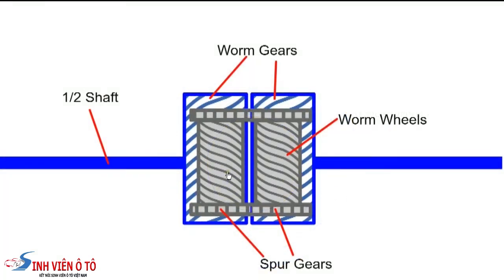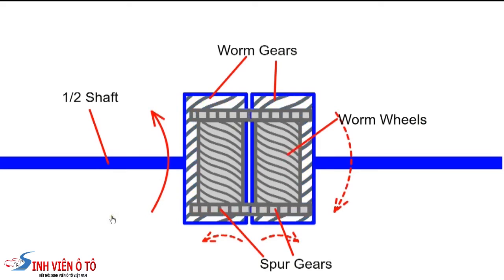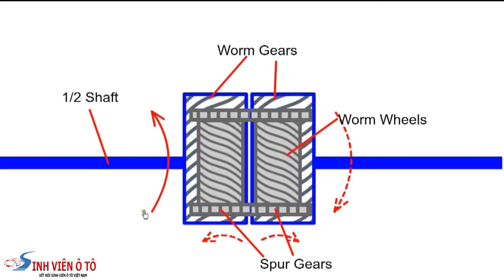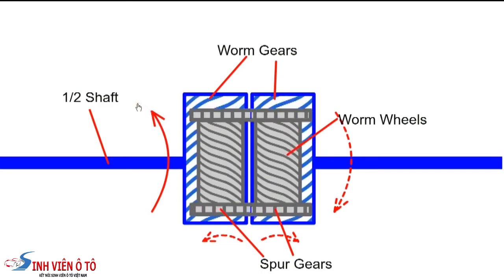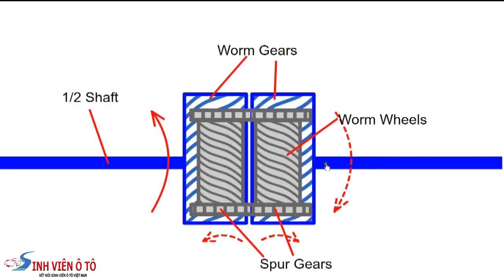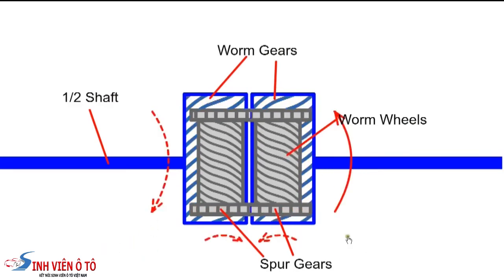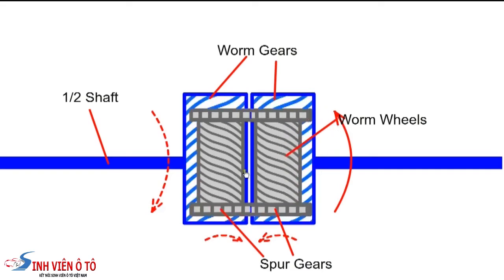To demonstrate the operation of the Torsen diff, we'll keep the cage stationary and rotate one of the wheels, effectively jacking up the car and rotating one wheel forward and the other wheel backwards. If the left wheel is rotated in this direction, it will drive the worm, which in turn will drive the other wheel via the spur gears. We'll have a similar effect if we rotate in the opposite direction.